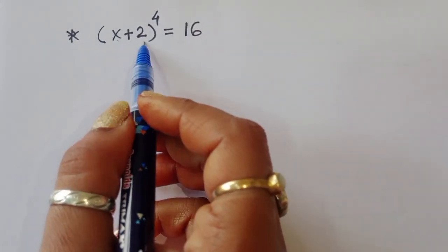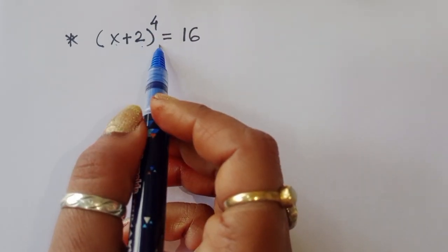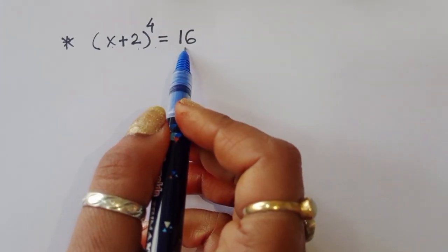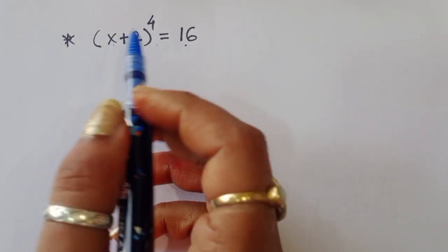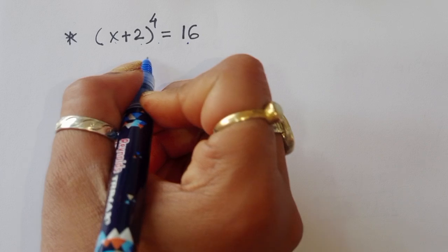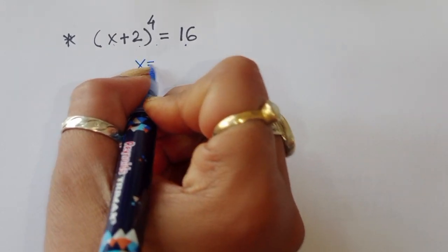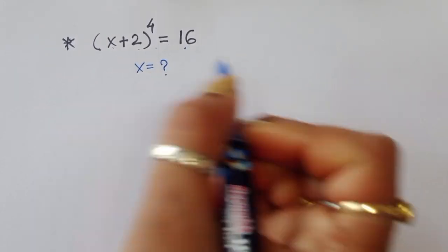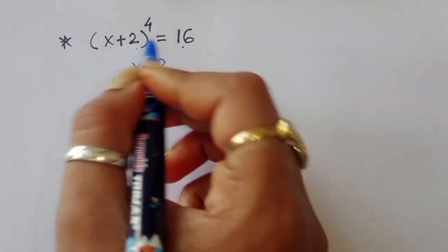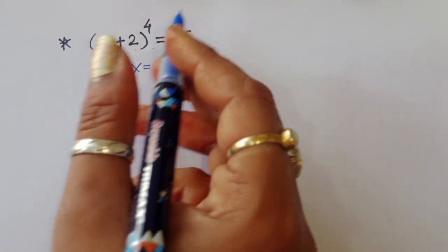The question is given: (x + 2)⁴ = 16. We have to find out the value of x. Let's see the solution.